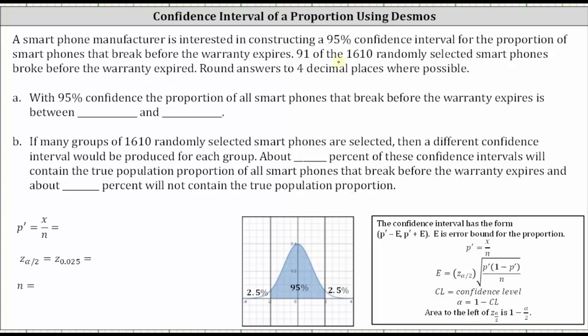Let's first determine the sample proportion, which is x divided by n, or in our case, 91 divided by 1,610. As a decimal, this is approximately 0.0565. The sample size n is 1,610.